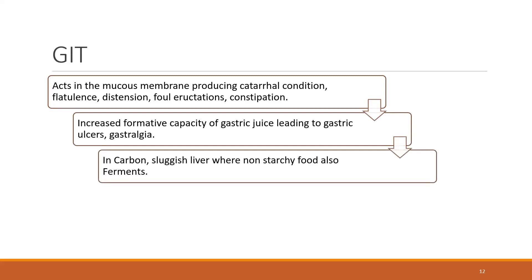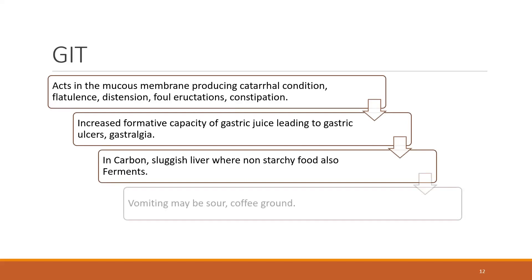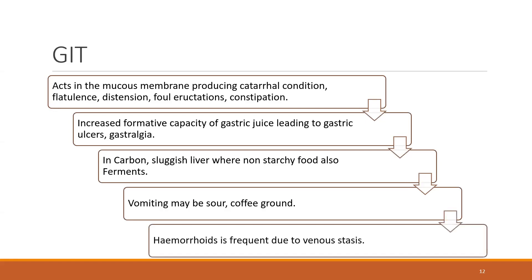In carbon, sluggishness runs everywhere — even in the liver, where non-starchy food also ferments. The digestion is not good, so fermentation happens. Vomiting may be sour or coffee-ground, which is the result of that fermentation. And hemorrhoids occur because of venous stasis in the rectal veins due to stagnation.